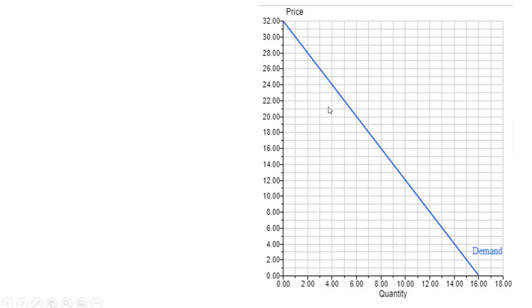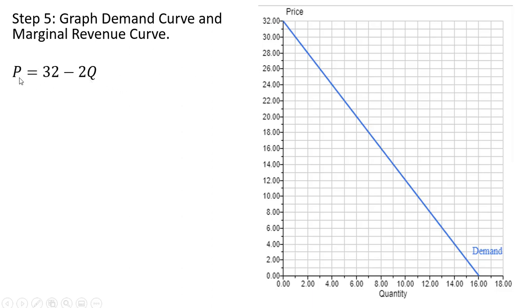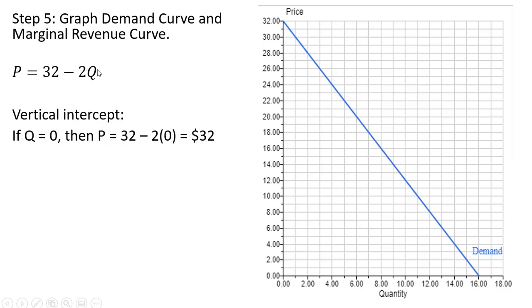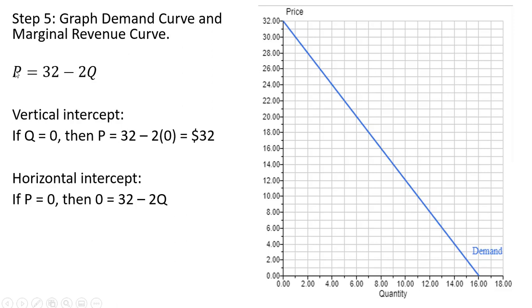Now we're going to graph the demand curve and marginal revenue curve. The demand curve is 32 minus 2Q. The vertical intercept occurs at P equals 32 when Q equals 0. The horizontal intercept occurs when P equals 0: setting 0 equals 32 minus 2Q and solving gives a horizontal intercept of Q equals 16. We connect those two points to draw the demand curve.